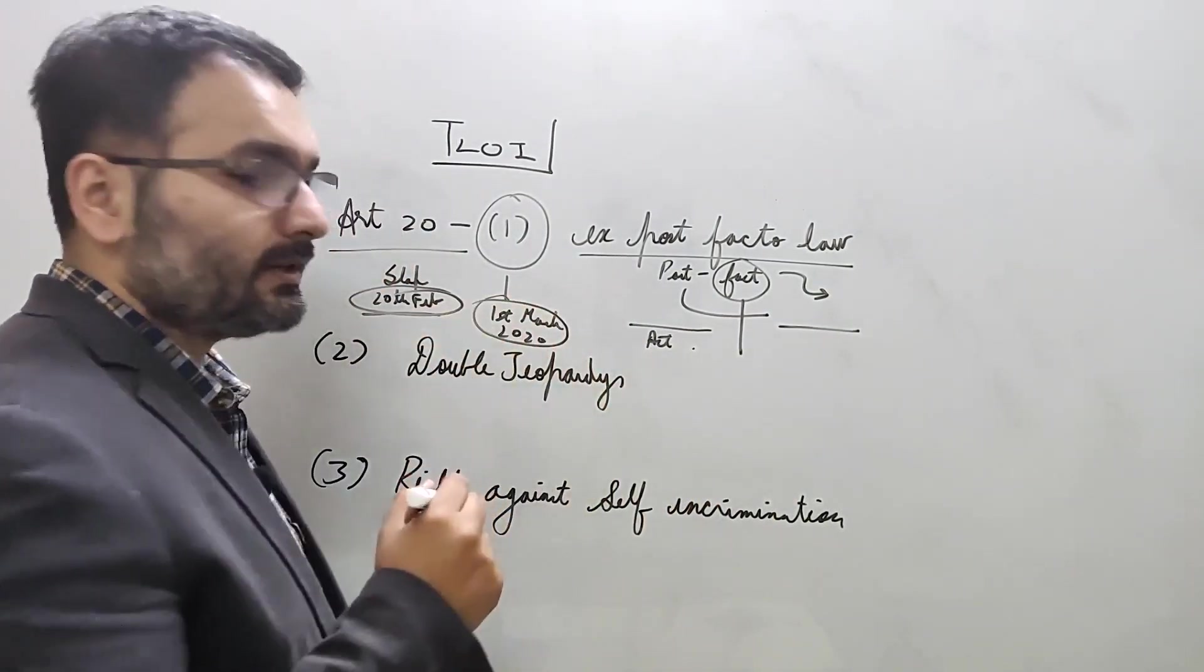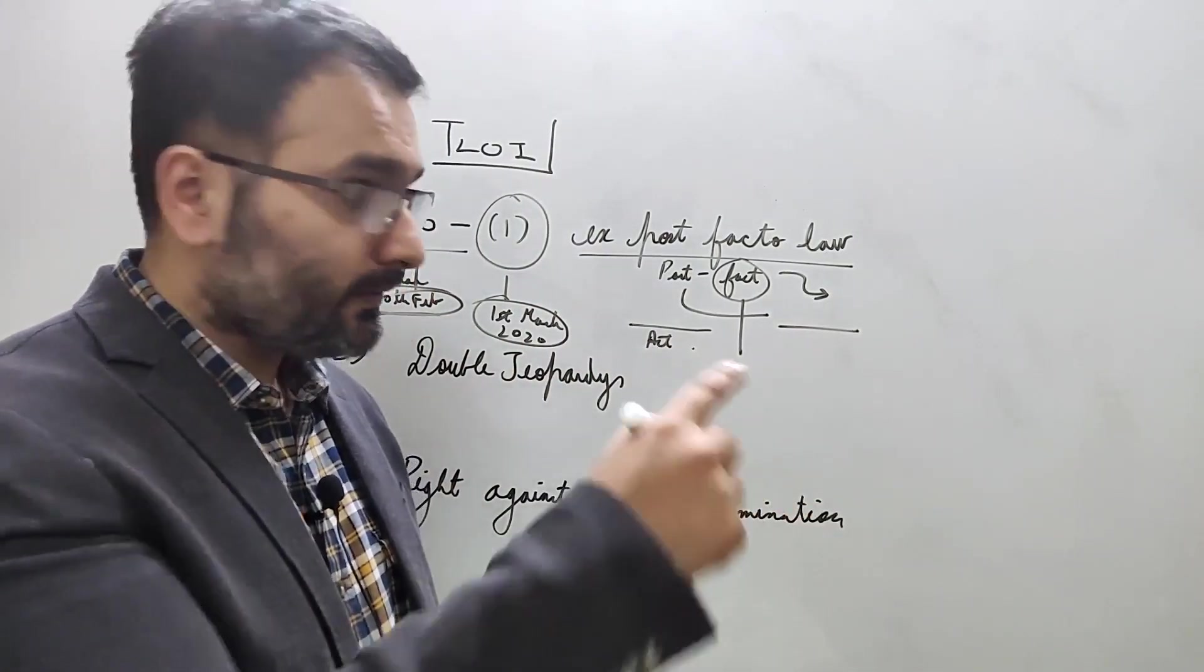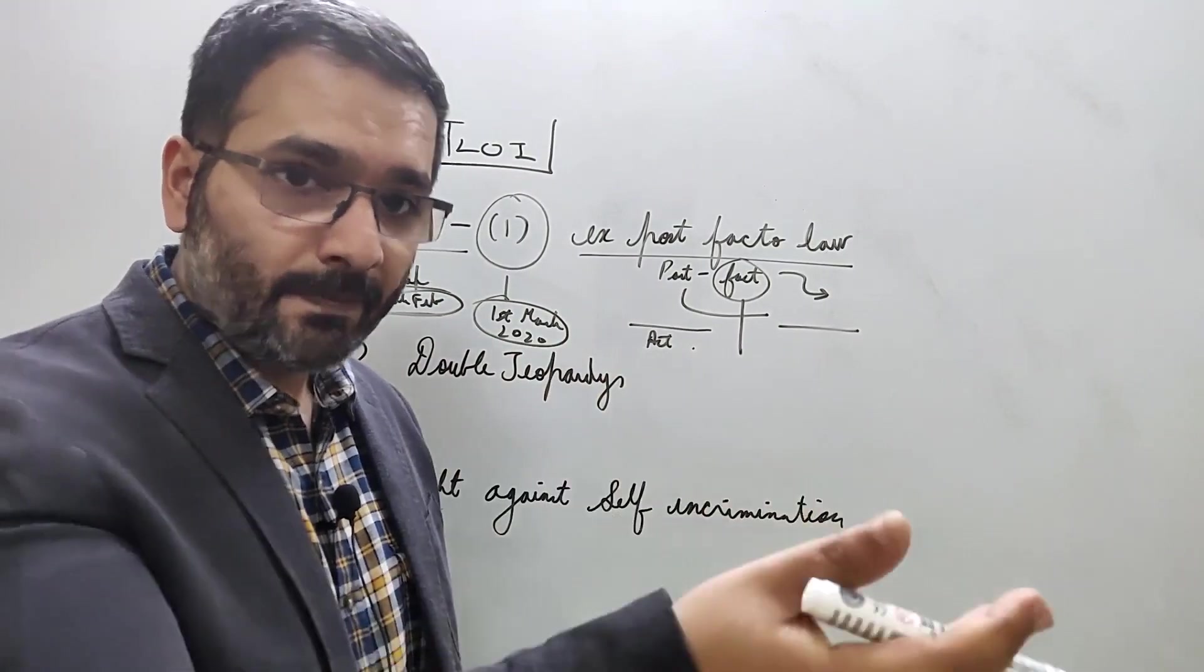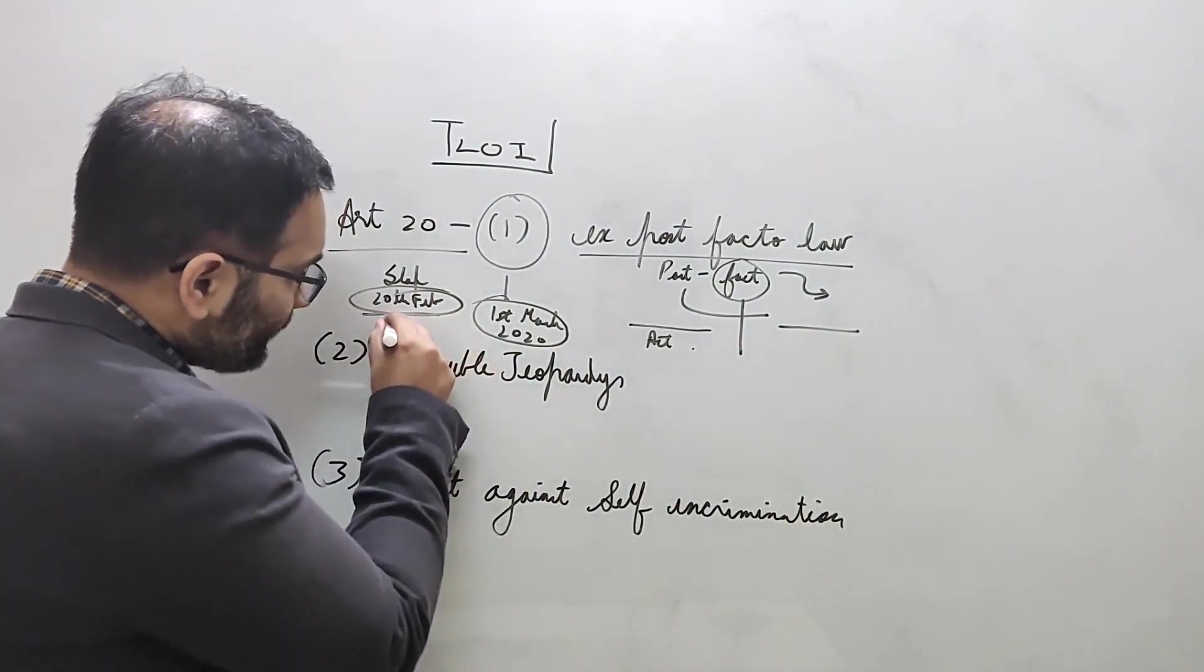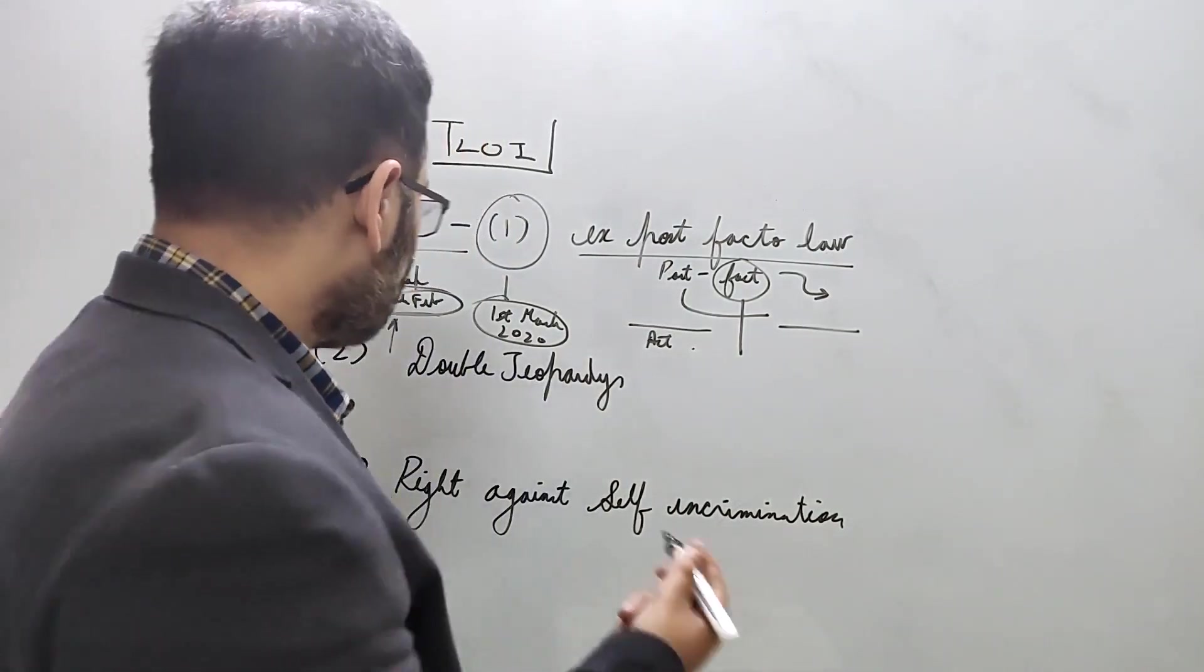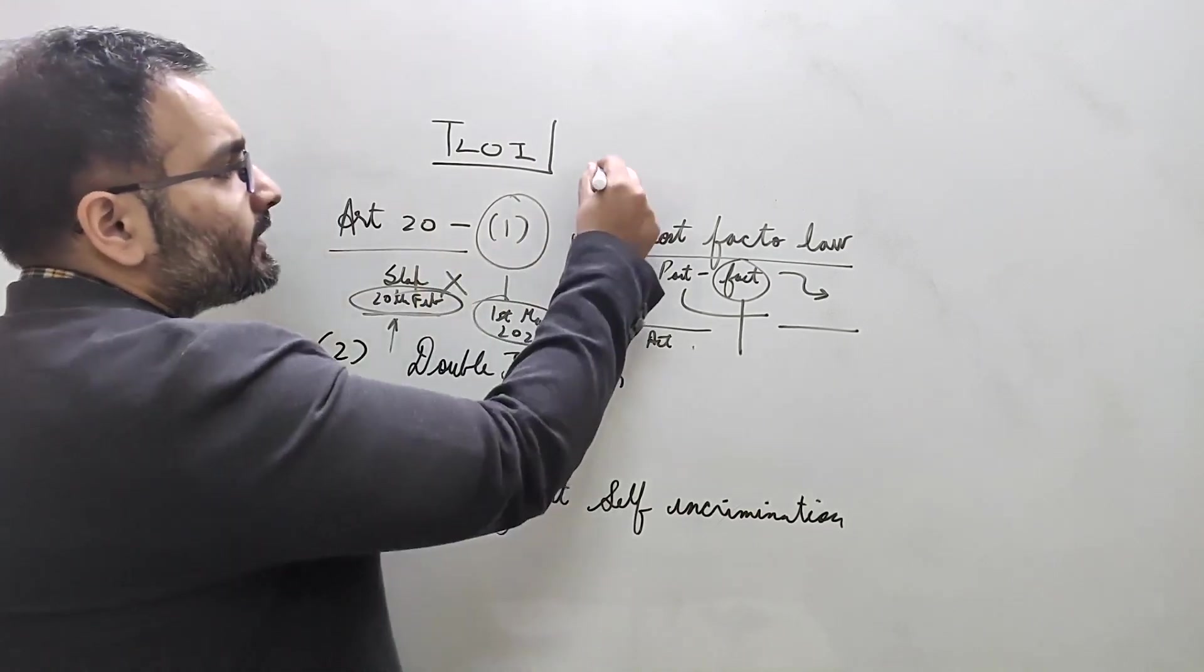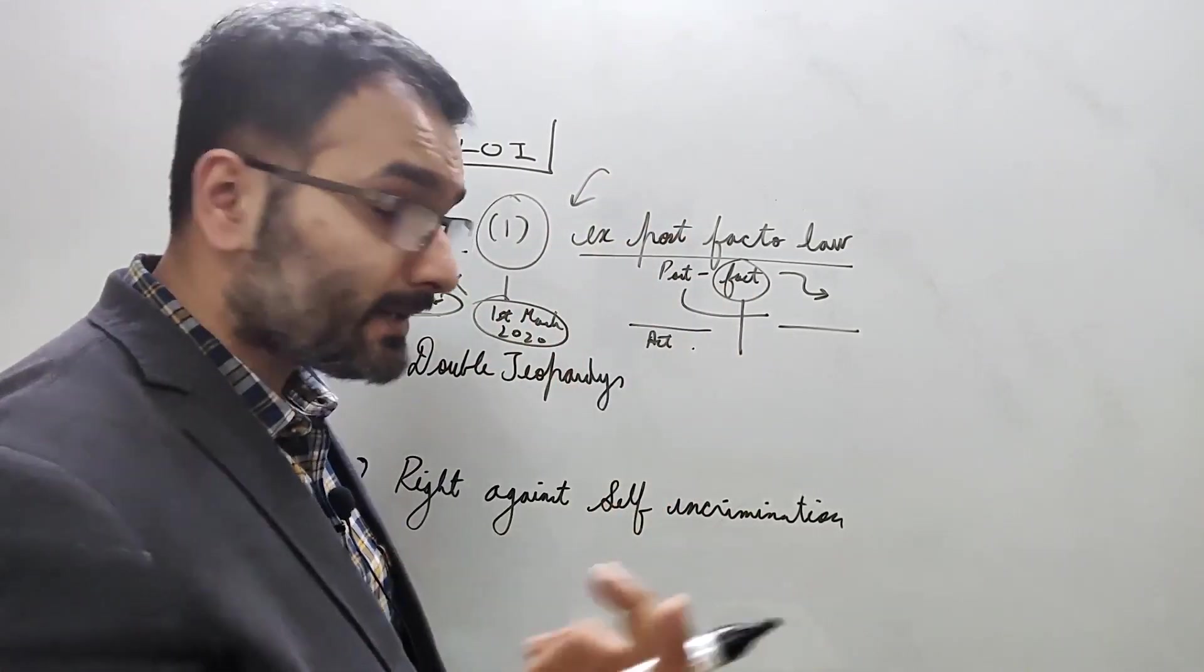So can you be convicted now for that offense for slapping someone on 20th February? No. This is what Article 20 clause 1 says.